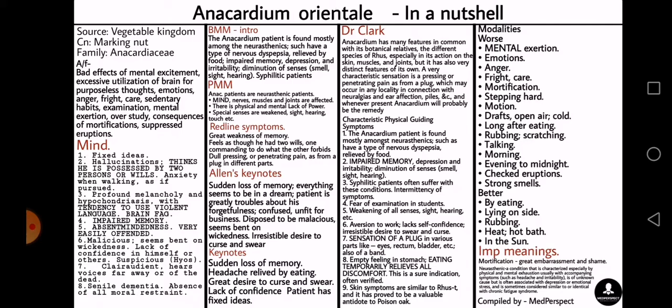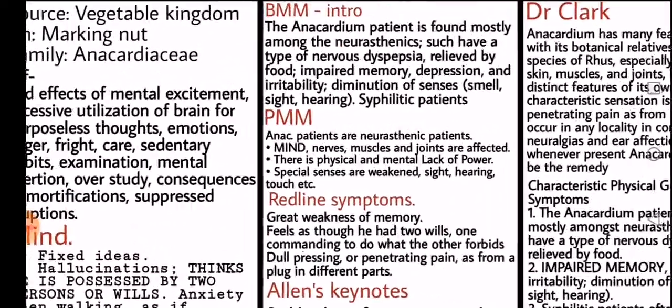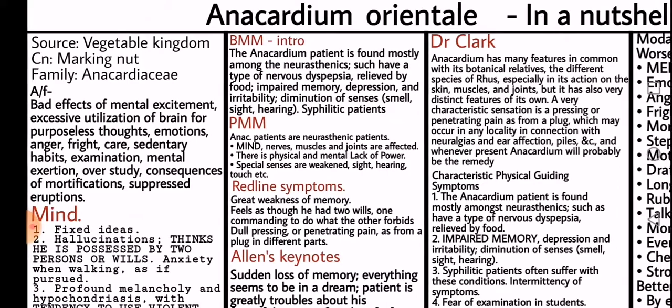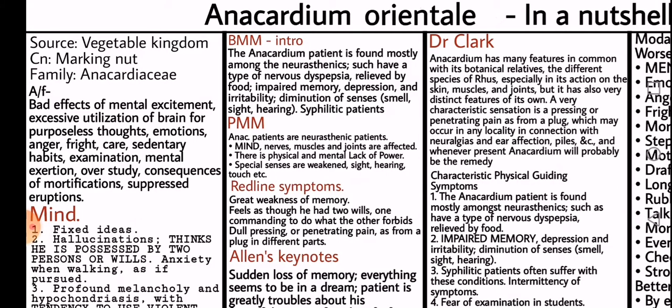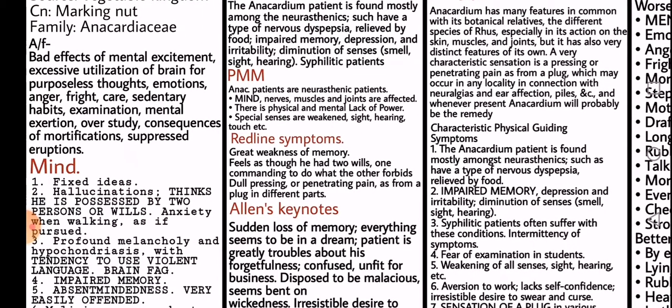We begin with the general information of the drug. Anacardium Orientale — Source: Vegetable Kingdom. Common Name: Marking Nut. Family: Anacardiaceae. The ailments from include bad effects of mental excitement, excessive utilization of brain for purposeless thoughts, emotions, anger, fright, care, sedentary habits, examination, mental exertion, over-study, consequences of mortification, and suppressed eruptions.